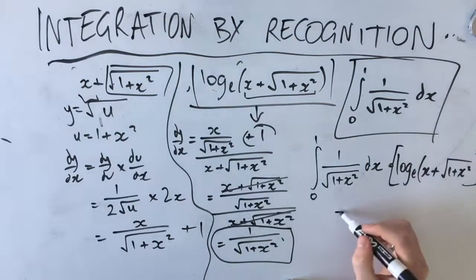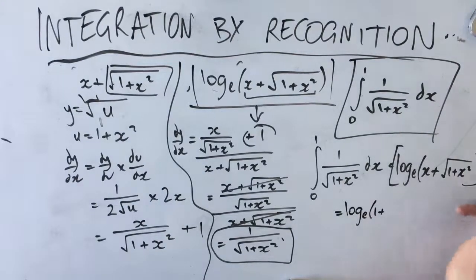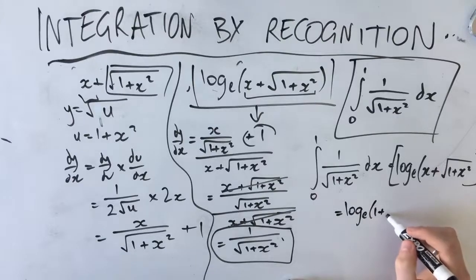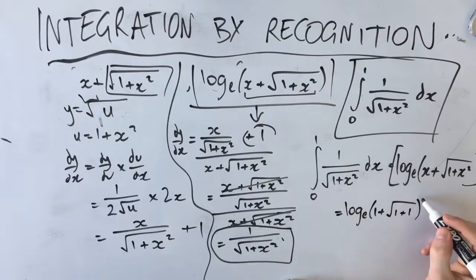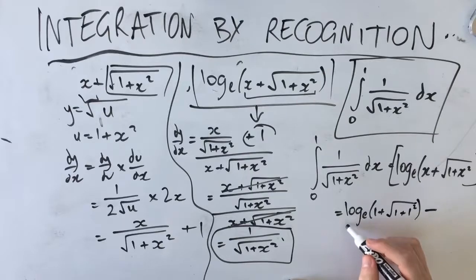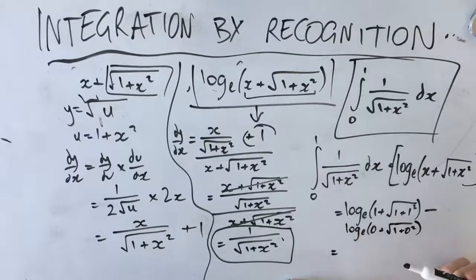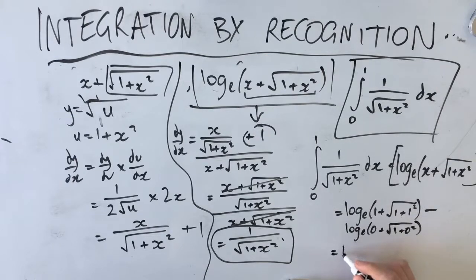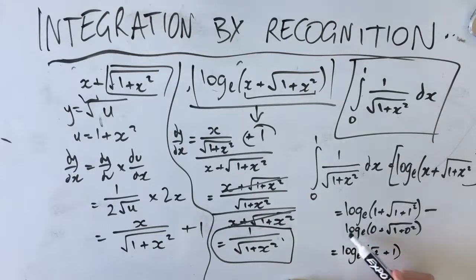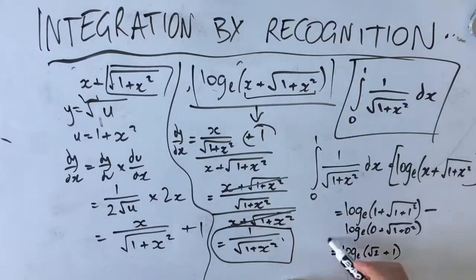Subbing in x = 1: log_e(1 + root(1 + 1²)) equals log_e(1 + root(2)). Subbing in x = 0: log_e(0 + root(1 + 0²)) equals log_e(1), which is 0. So our answer is simply log_e(1 + root(2)).